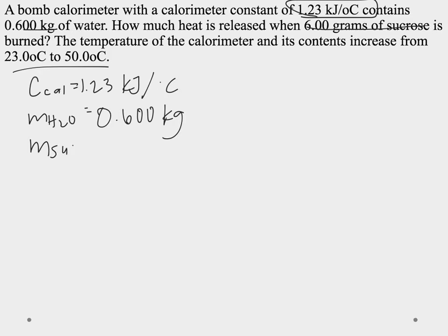Don't know if we need that or not but we can label it. And then the temperature and its contents increase from 23 to 50 degrees Celsius. So our delta T is final minus initial which is going to be 27 degrees Celsius.